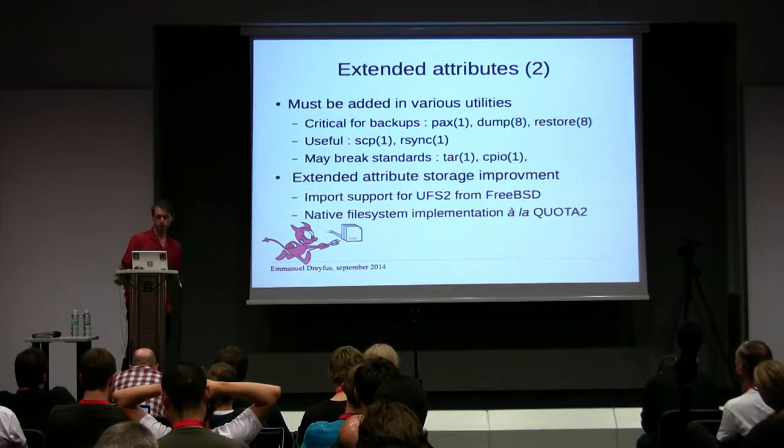SCP is a bit more of a problem — Mac OS X implemented it but it was not propagated upstream, so someone will have to work on it. There are commands that could benefit from extended attributes, like tar and cpio, but adding extended attributes to those formats risks breaking standards. Some improvements still needed: adding extended attributes in UFS2 (FreeBSD has it, someone has to port it), and better storage for extended attributes instead of sparse files — storing them directly in the file system like quota was done years ago.